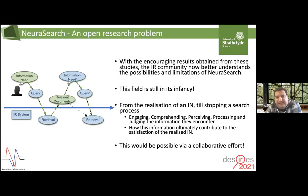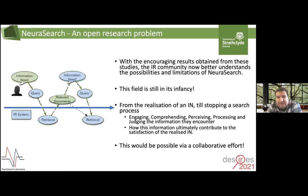With these encouraging results obtained over the past decade, the IR community is now in a better position to understand the possibilities and limitations of neural search. But we are barely scratching the surface, and there is so much more that can be done — from the realization of an information need until the stopping of the search process, including how participants engage with, comprehend, perceive, process, and judge information, and ultimately how all this information will help users satisfy their information need. This requires a collaborative effort, and this is my invitation for the community to get involved.